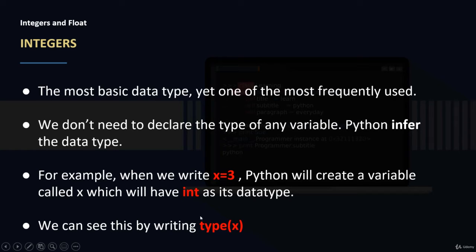The type function takes a variable and it returns the type of this function. So if we run type of x, it will return Integer.